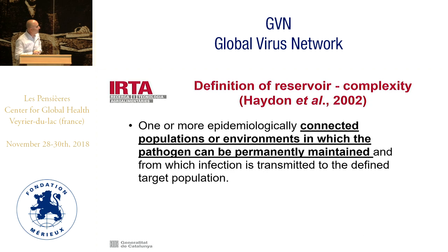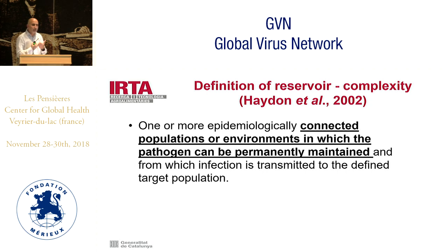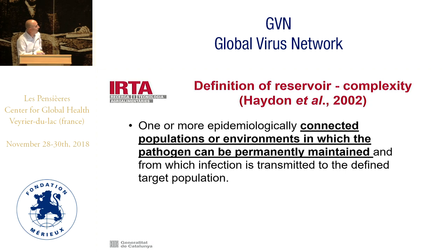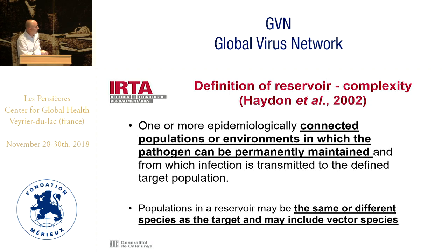I would like to present a definition from Hayden and colleagues in 2002, which adds complexity that must be tackled from an intervention point of view. They defined the reservoir as 'one or more epidemiologically connected populations or environments in which the pathogen can be permanently maintained and from which infection is transmitted to the defined target population.' This implies that within these populations, the reservoir can include the same species, different species, or even a number of species, and vector species must be included as well.